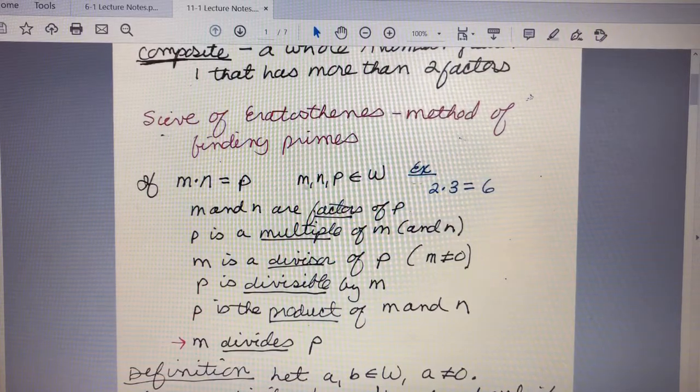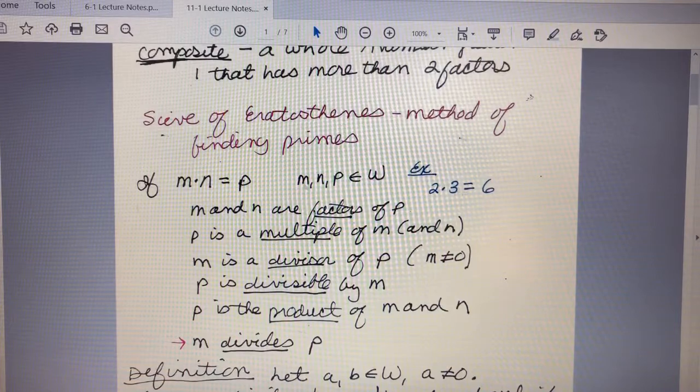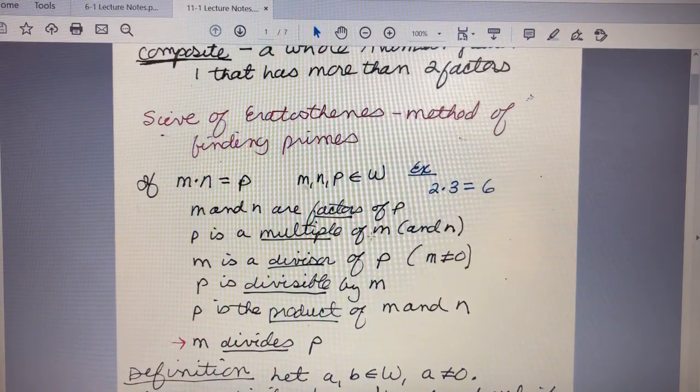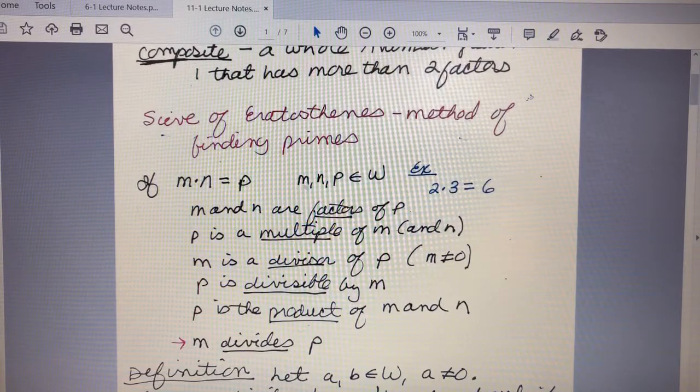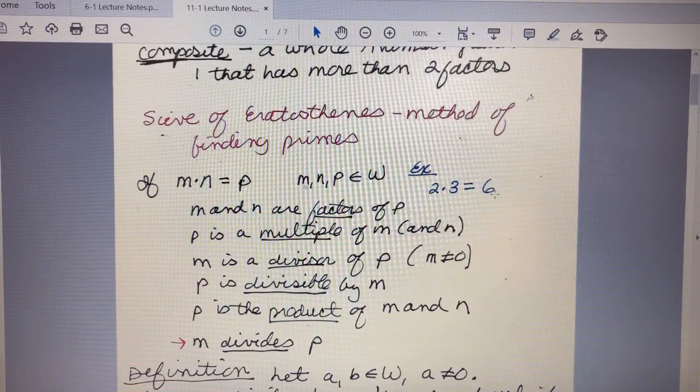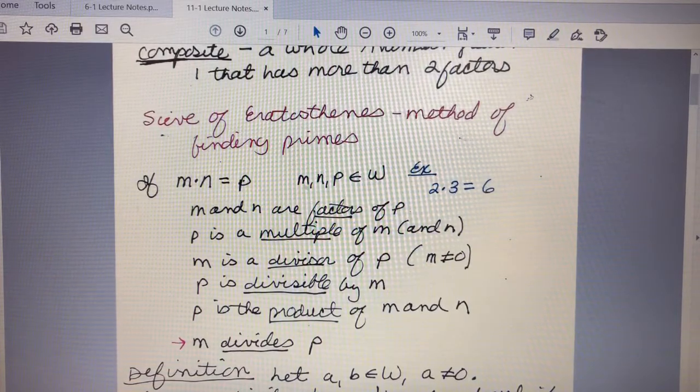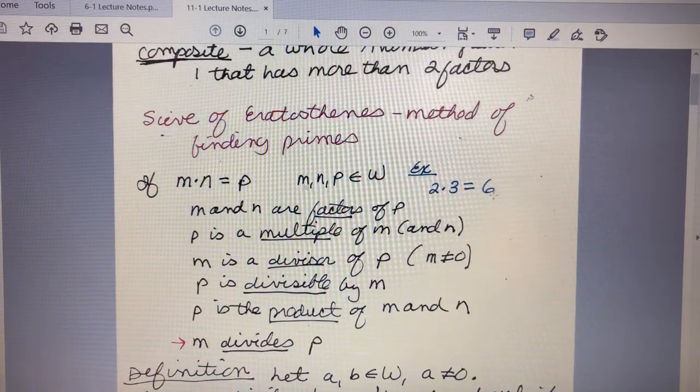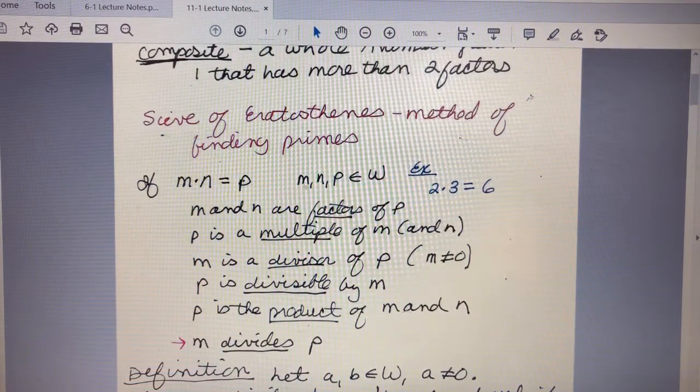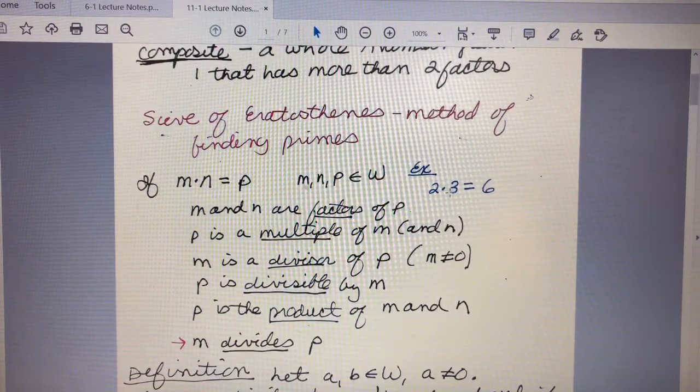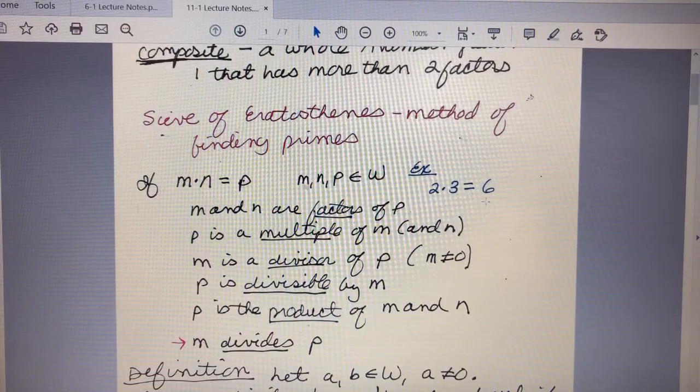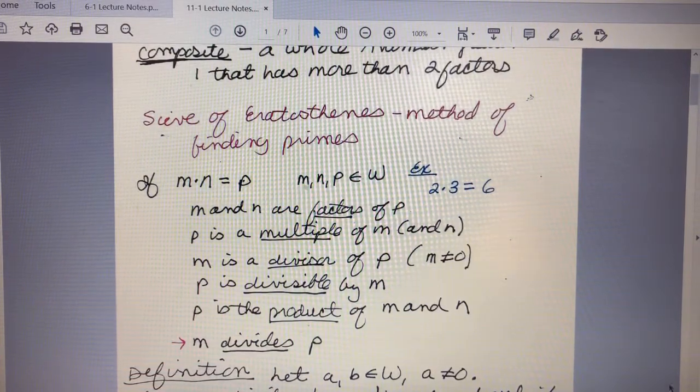Here I've given an example. Suppose m was 2 and n was 3. 2 times 3 is 6, so 2 and 3 are factors of 6. 6 is a multiple of 2, 6 is a multiple of 3. m is a divisor of p, so 2 is a divisor of 6, 3 is a divisor of 6. p is divisible by m, so 6 is divisible by 2, also divisible by 3. p is the product of m and n—6 is the product of 2 and 3.